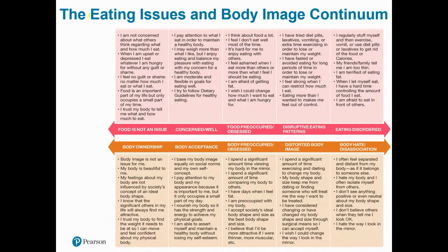This slide shows two different continua — body image on one axis and eating behaviors on the other — forming a spectrum. A person at any given time could fall anywhere on this spectrum and can move from one place to another. Someone with what we might call body ownership, or really healthy body image, feels their body is beautiful and secure, and isn't overly influenced by society's portrayal of an ideal body.